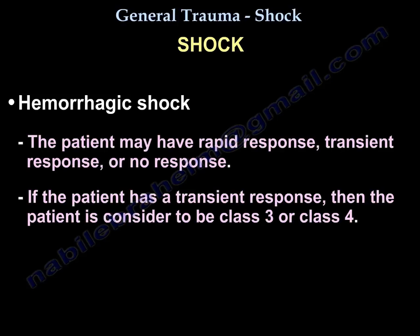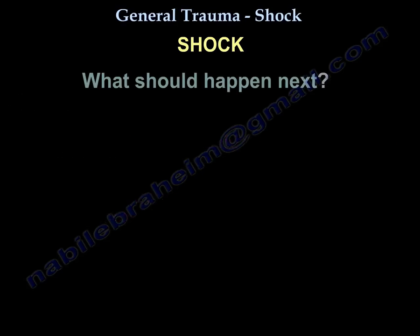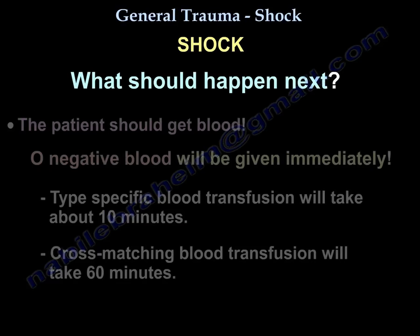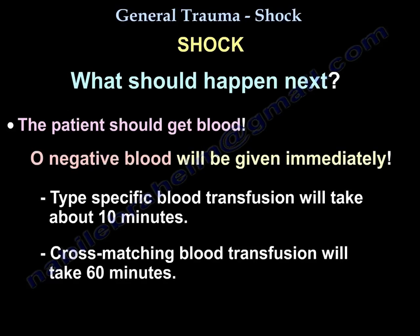The patient may have a rapid response, transient response, or no response. If the patient has a transient response, the patient is class three or four. Then you need to get blood — O-negative will be given immediately, type-specific blood will take about 10 minutes, and cross-matched blood will take 60 minutes.